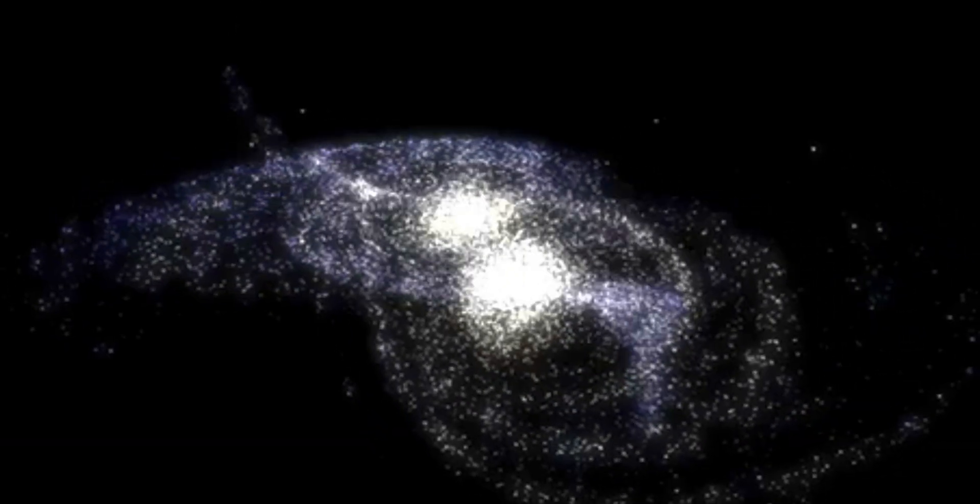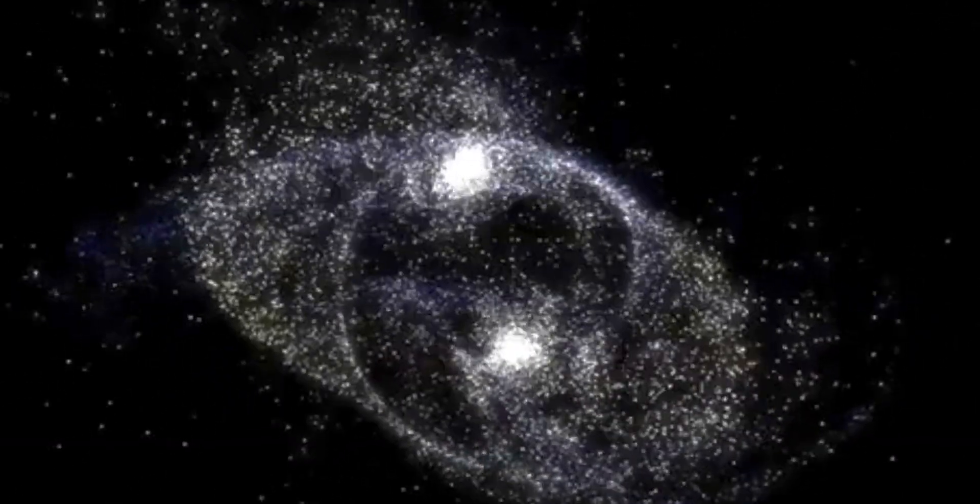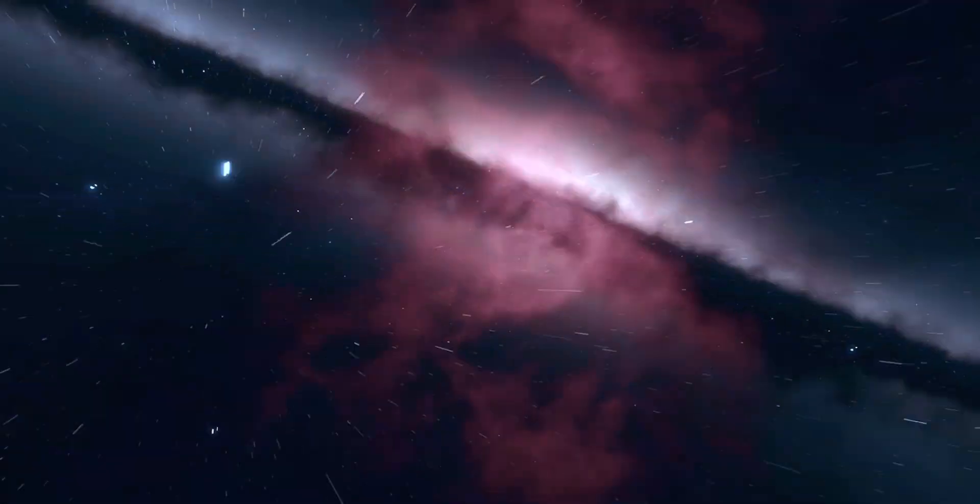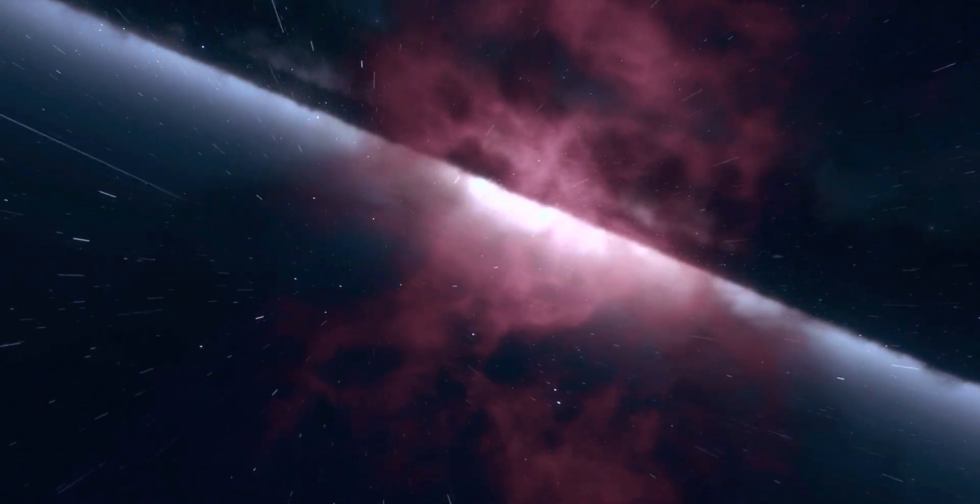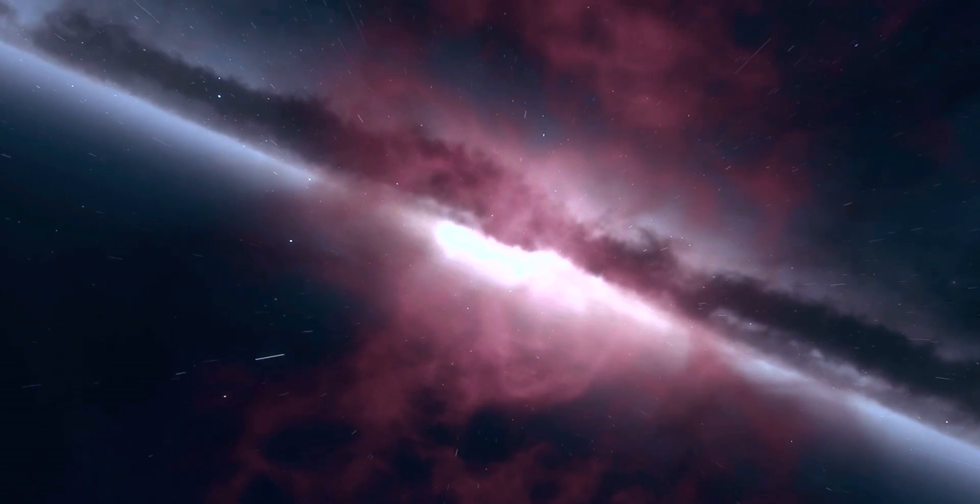There are stellar streams, long, river-like trails of stars that used to belong to other galaxies or clusters. The Milky Way ate them, and Gaia just traced their remains. Then, there are ripples in the galactic disk, like waves on water, likely caused by gravitational disruptions from nearby galaxies like the Large Magellanic Cloud. The galaxy isn't just spinning, it's vibrating. We also found hidden star clusters, groups of stars moving together in perfect synchrony. Some are brand new, others are ancient, drifting slowly across the galactic sky.